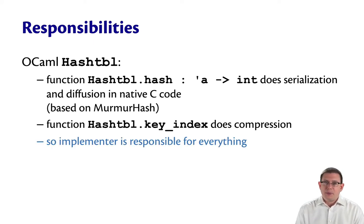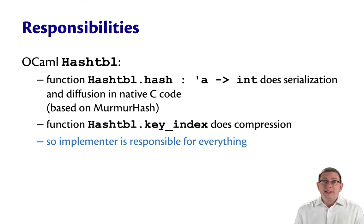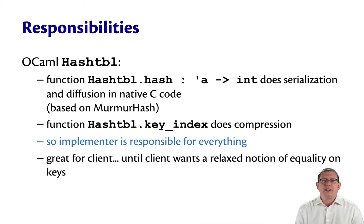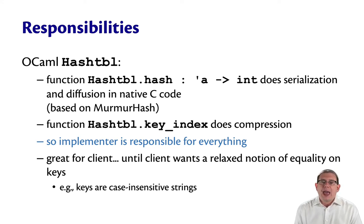In that implementation of hash tables, the implementer is responsible for everything — the client doesn't even have to pass in the hash function. That's great when you're a client, until you want a relaxed notion of equality on keys. For example, maybe your keys aren't just strings but you want them to be case-insensitive strings. At that point, the consistency between hash and equals is getting lost.